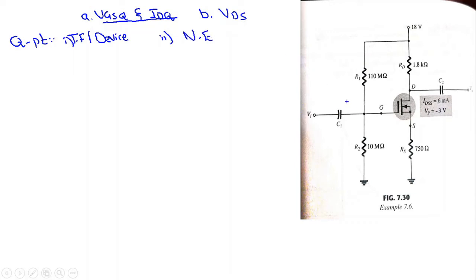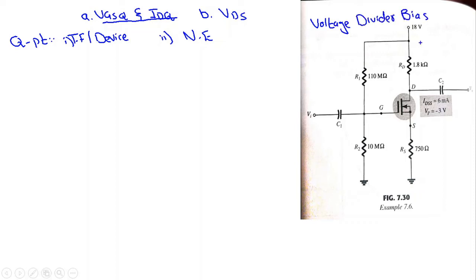We are given an N-channel depletion type MOSFET arrangement. This is the symbol of the N-channel depletion type MOSFET, and we are given IDSS and VP. We have two resistors here, which is why this is a voltage divider bias configuration of the N-channel depletion type MOSFET.